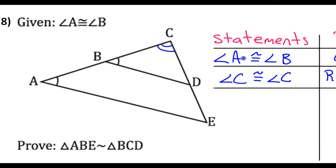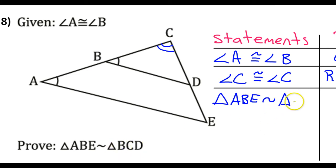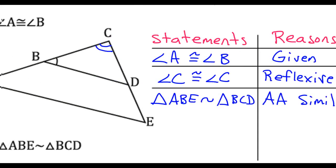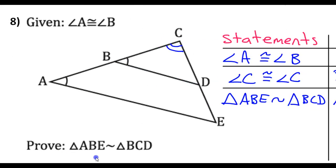Now that we have angle and angle, we can go ahead and say the triangles are similar by the angle-angle similarity theorem. Triangle ABE is similar to triangle BCD by the angle-angle similarity theorem. That's it — a three-step proof. Very elegant.